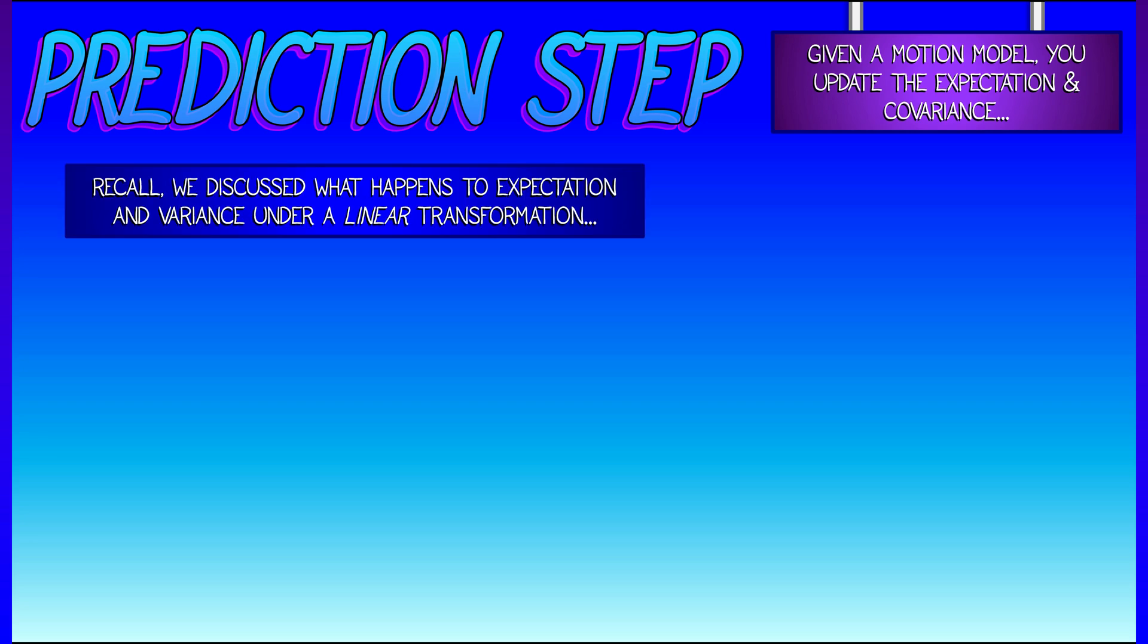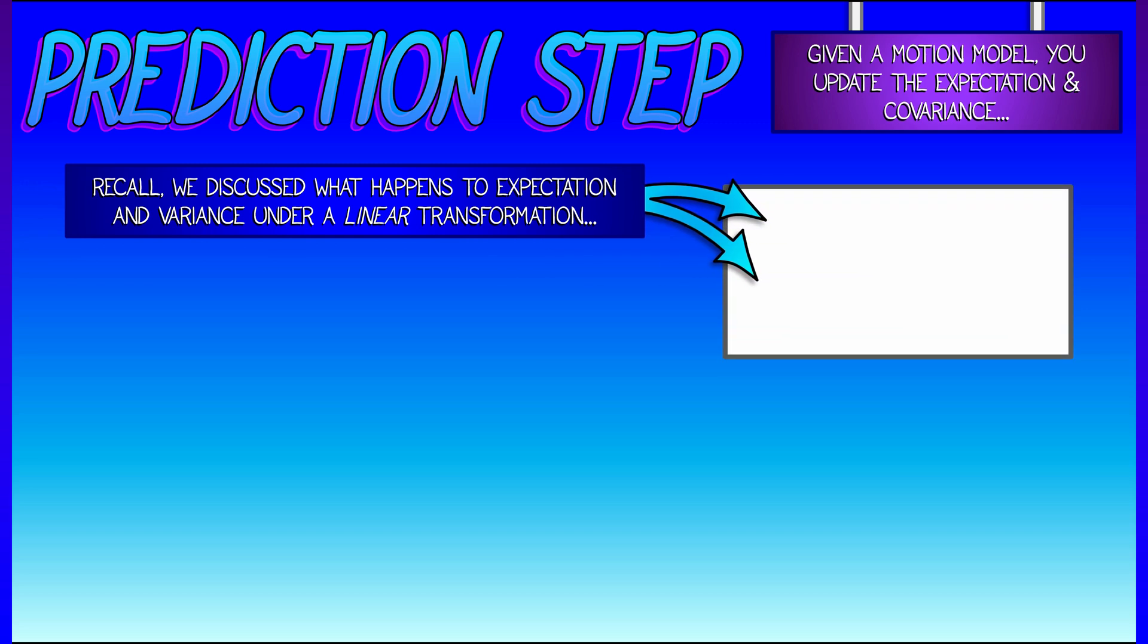We know that if it's a linear transformation, the expectation is linear, the covariance is quadratic. Using that transformation, what do we do if we have a nonlinear state update model?